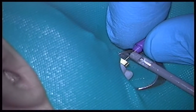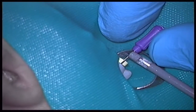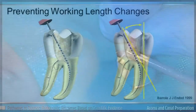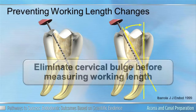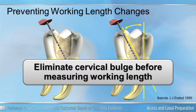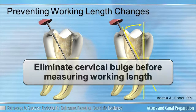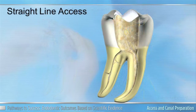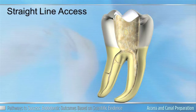When determining your working length, you want to remember that Ibarola told us that the best time to determine your working length is after getting rid of your dentin triangle in the coronal segment. This is because before doing that, you have a curve coronally and apically. And upon removal of that dentin triangle, you actually have a canal that's shorter than your initial estimate.